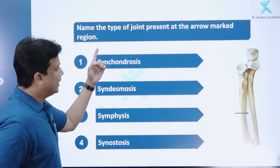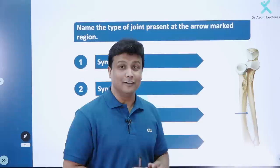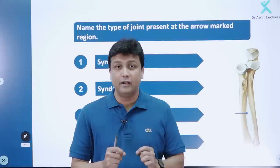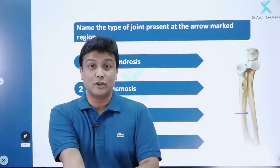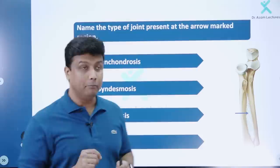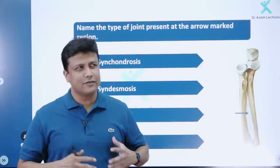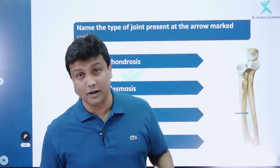The first question: name the type of joint present at the arrow-marked region. In this diagram you can see the ulna and radius, and the arrow mark points towards the middle radio-ulnar joint. Between the ulna and radius there are three joints: superior, middle, and inferior radio-ulnar joints. The superior and inferior are pivot joints for pronation and supination, whereas the middle radio-ulnar joint is actually an immovable joint.